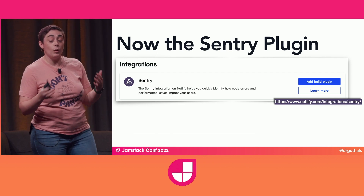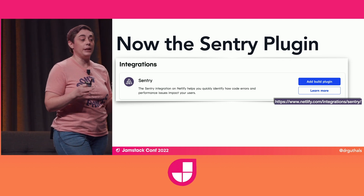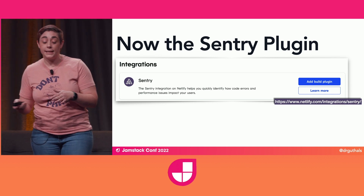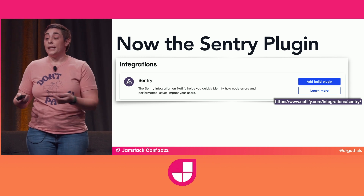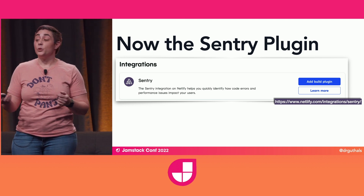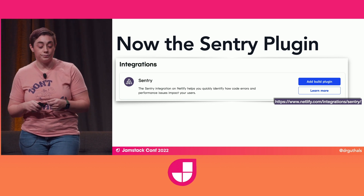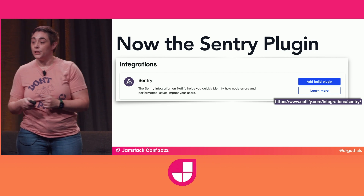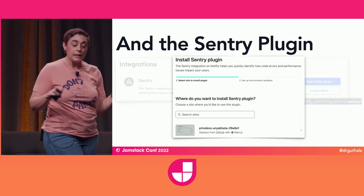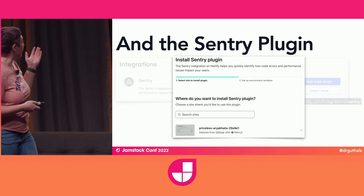Now for the Sentry plugin. You want to be able to catch errors being shipped to production, as well as manage the health of your releases and rapidly resolve latency errors before they impact the customer. The Sentry build plugin on Netlify helps you quickly identify how code errors impact your users. With this integration, Netlify will automatically notify Sentry every time the site builds. If Sentry reveals anything suspicious, you can instantly revert back to a previous version of your site with Netlify while you resolve that issue. You can get started at netlify.com/integrations/Sentry by clicking the add plugin button, then attach the plugin to the applications you want monitored, set up your environment variables, and that's basically it.